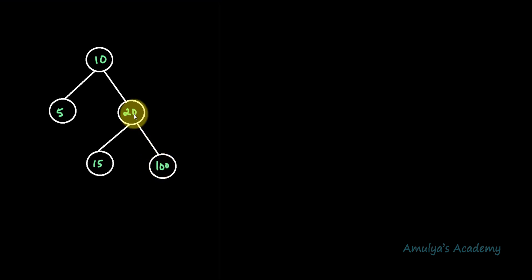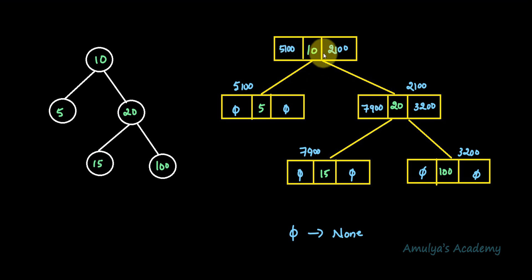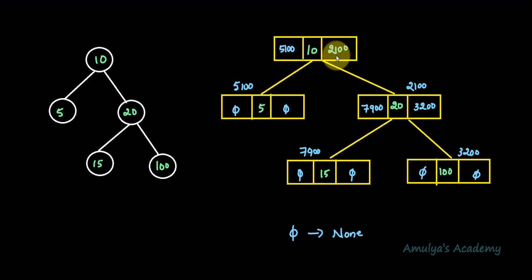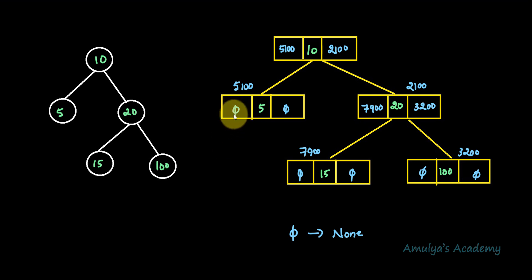In our program we will represent this tree where every node is an object. This is the first node and it contains three parts — ten, with a reference to its left child and a reference to its right child. Coming to the next node, it contains a key and it doesn't contain a left node, so the reference is none, and it doesn't contain a right child either, so that's also none.